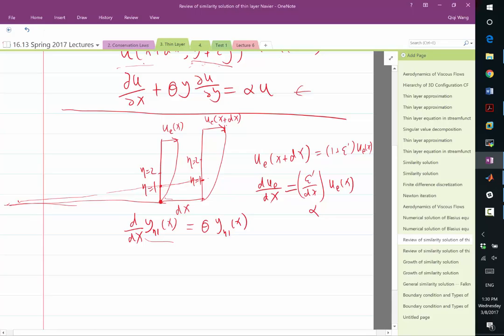Theta only depends on x because we are assuming a self-similar solution. And if we have a self-similar solution, then if you connect these two points when eta are both equal to two, then you are going back to the same point. Otherwise, it wouldn't be a self-similar solution.